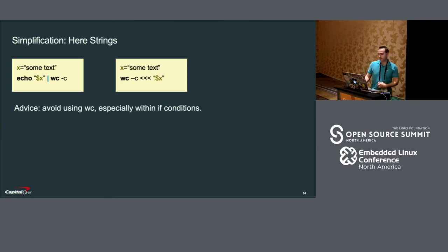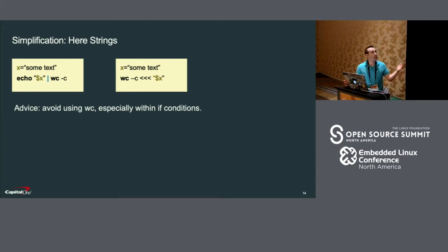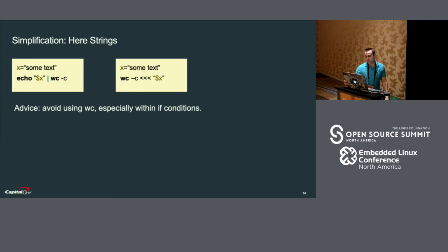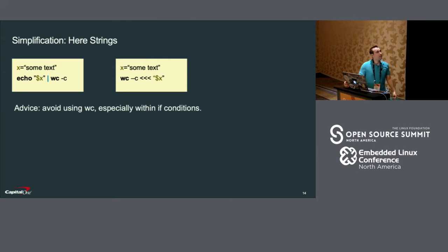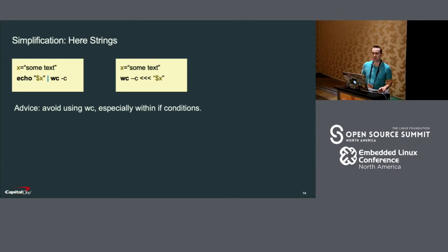Another common pattern I see is the script echoes some text and then immediately pipes it into another command. I consider this a red flag. For one thing, it's creating an unnecessary sub-process because everything after a pipe is run in a sub-process. Second, it's running the echo program, which is not really necessary. I replace these with the here string — shown with three less-than symbols. On a side note, the word count program has been very unpredictable in my personal experience. I don't recommend using it, especially inside of if statements.